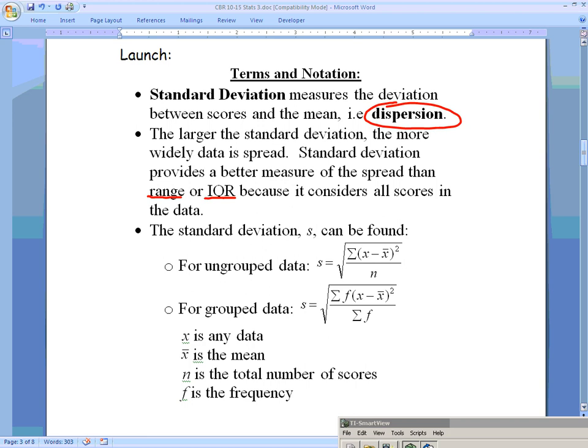There are two formulas that we'll be using. For ungrouped data, you've got s, and sometimes instead of s you'll see lowercase sigma being used as well. That equals the square root - and we've got a capital sigma there, which always means sum. So we're adding up all of our data: you take each piece of data, subtract the mean from it, then square that number. You do that for each piece of data, add them all up, divide by the number of terms, and square root all that. There's a slightly different version for grouped data that involves frequencies.